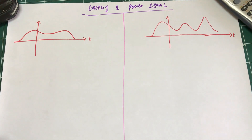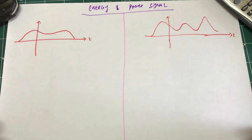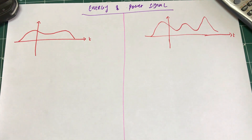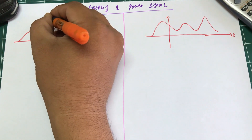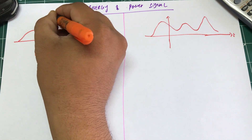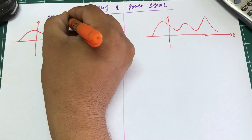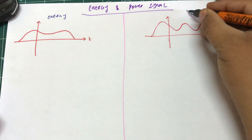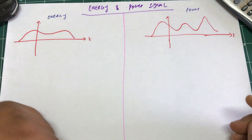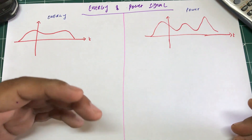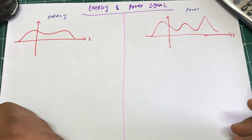In signaling systems or communication systems, we classify signals in terms of two types: first, in terms of energy, and the other in terms of power. We have an energy signal and we have a power signal.